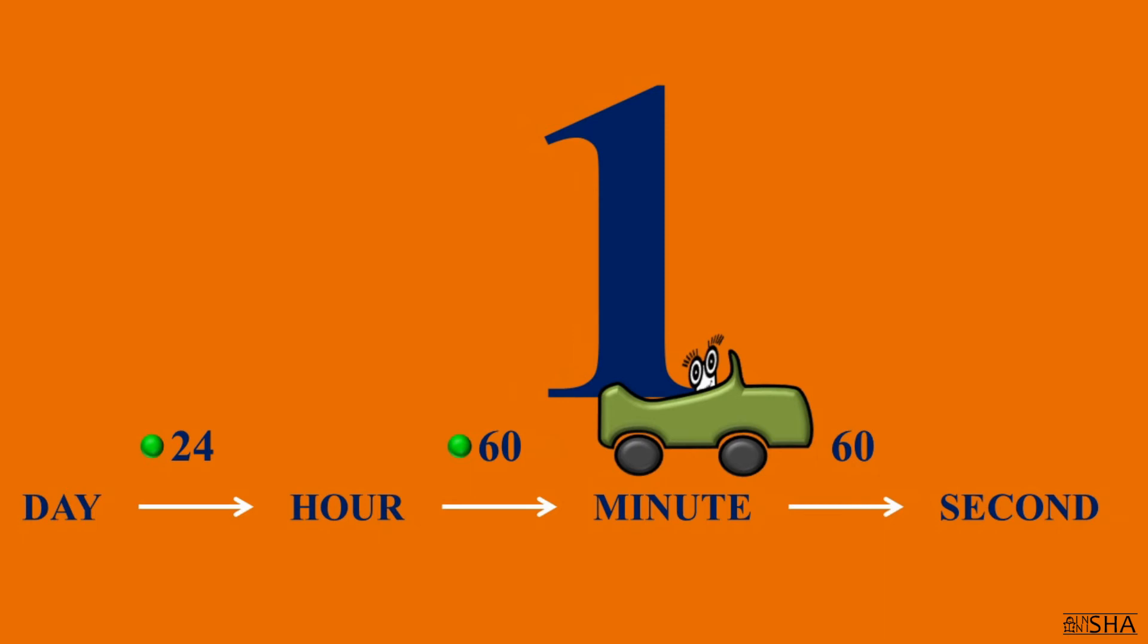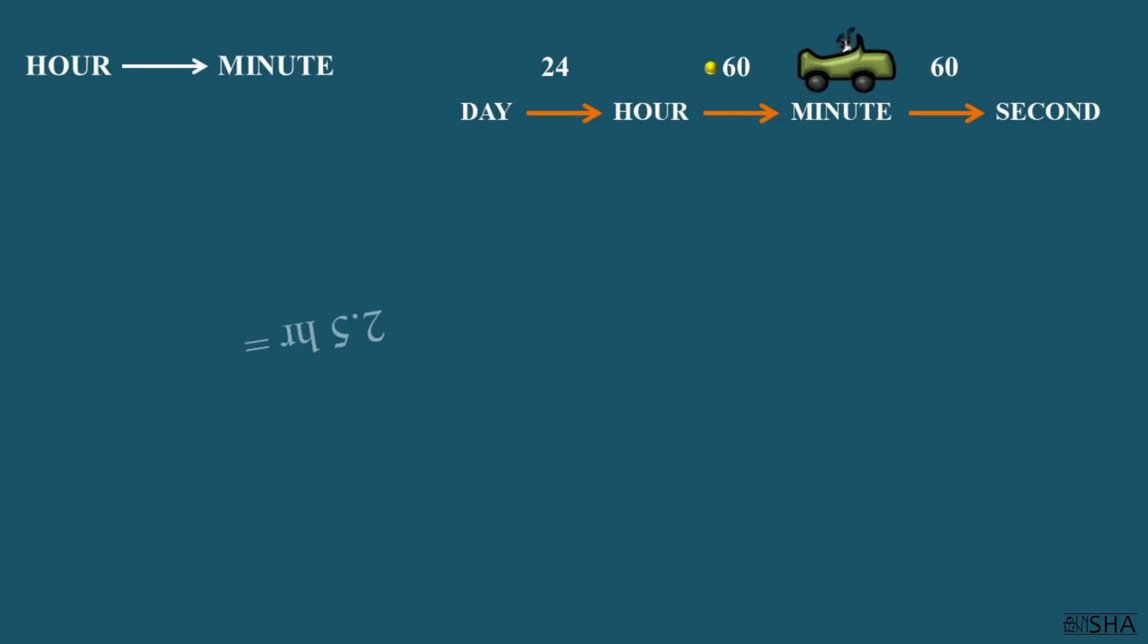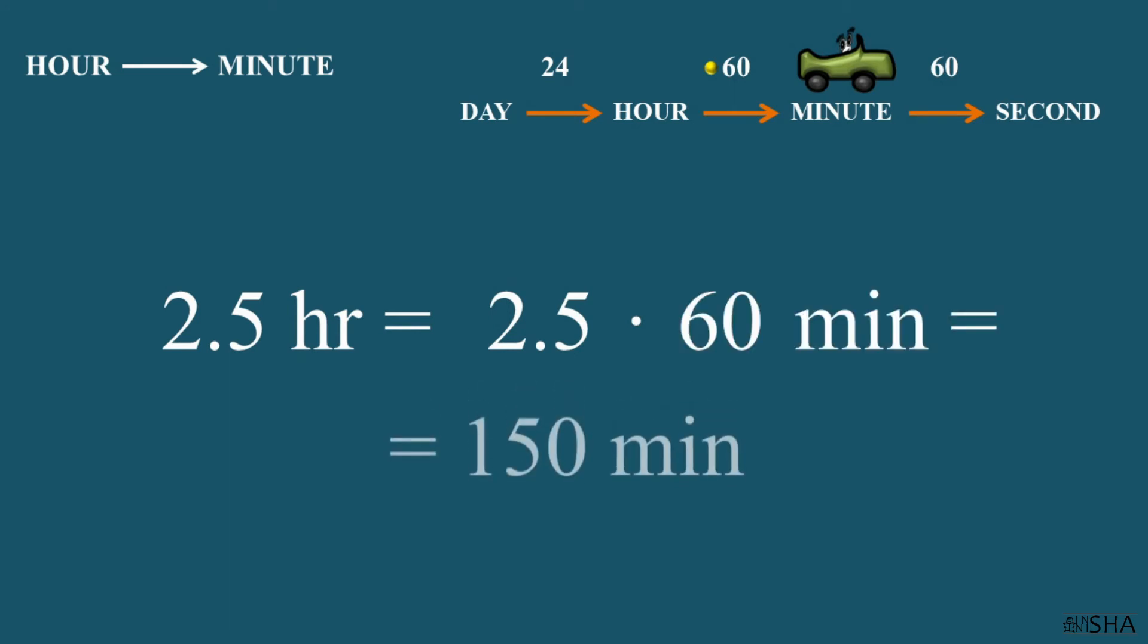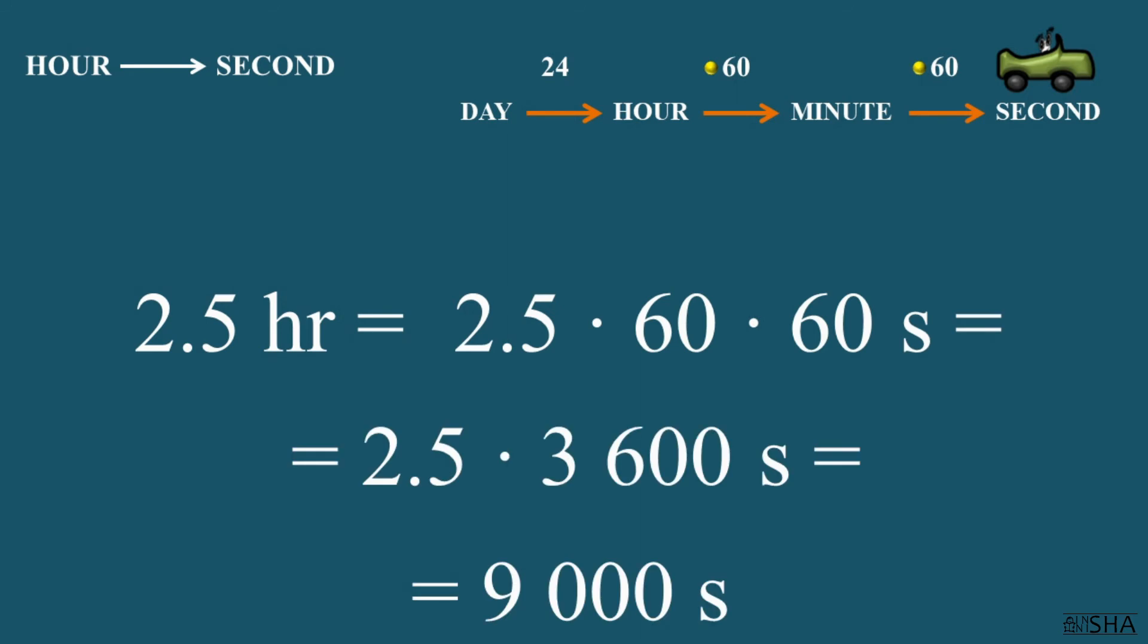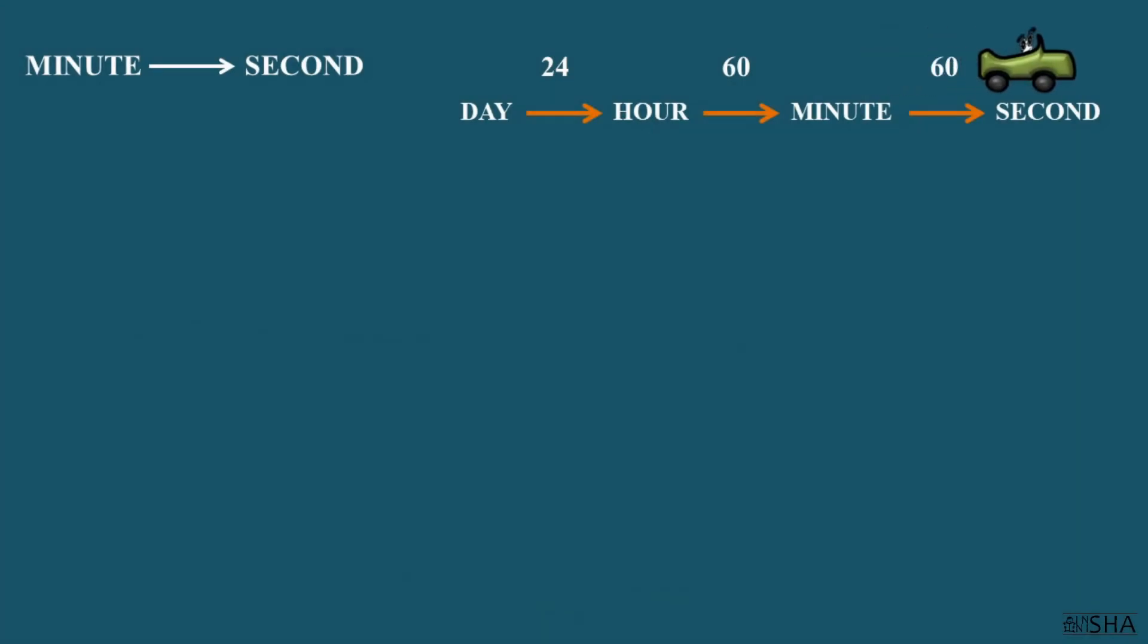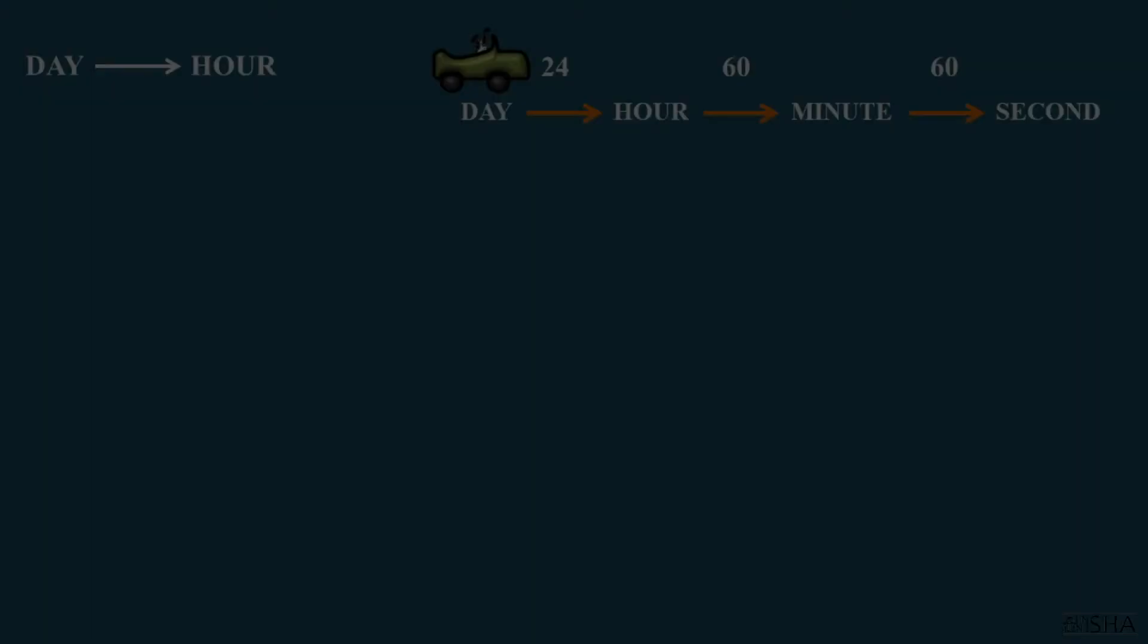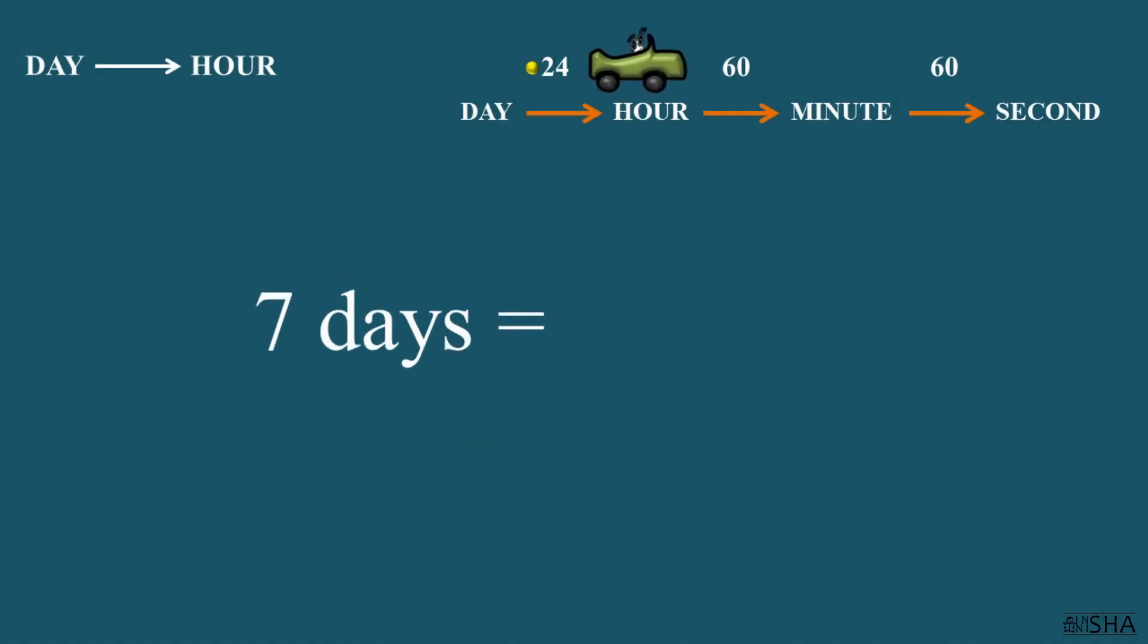Let's, as usual, practice with examples. Let's multiply 2 and a half hours by 60 minutes. We get 150 minutes. 2 and a half hours or 150 minutes. To convert 2 and a half hours into seconds, you need to multiply 2.5 by 3600 seconds. We get 9000 seconds. 0.6 of a minute equals 36 seconds. We've multiplied 0.6 by 60 seconds. Let's convert 7 days. By the way, 7 days are the week. So let's convert them into hours. 7 times 24 hours. We get 168 hours.